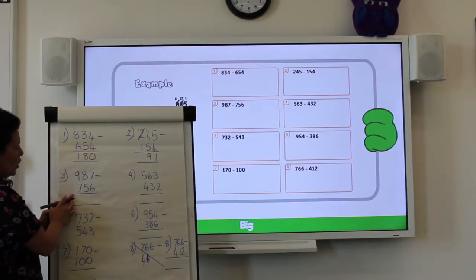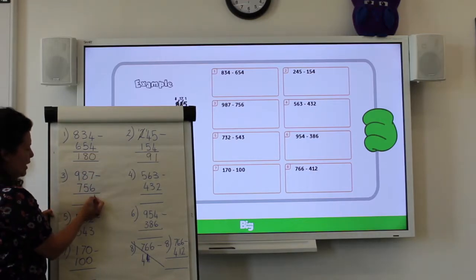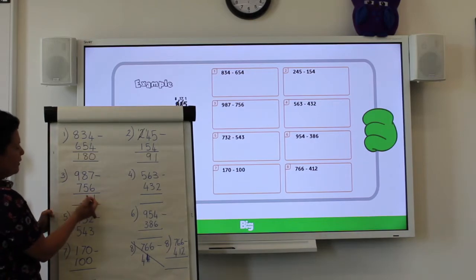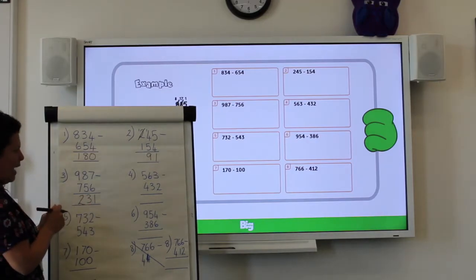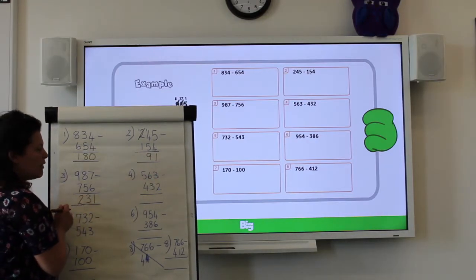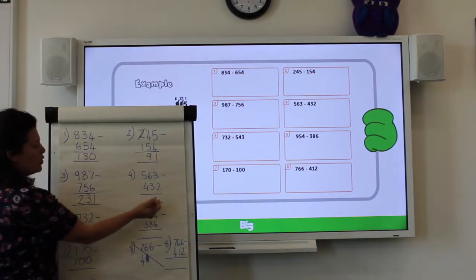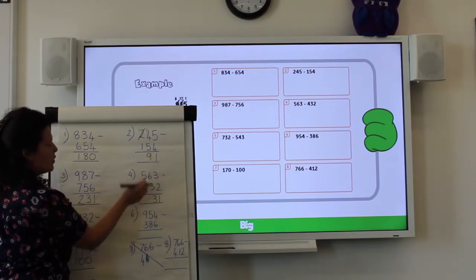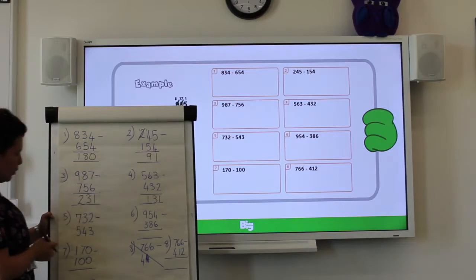987 take away 756. 7 take away 6. That's fairly straightforward. There's a 1. 8 take away 5 is 3. 9 take away 7 is 2. No borrowing there. 563 take away 432. 3 take away 2 is 1. 6 take away 3 is 3. 5 take away 4 is 1. No borrowing there.